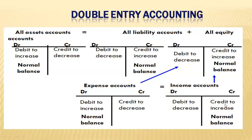The last account type is the income account. Income accounts will normally have a credit balance, just like liability and equity accounts. Any time there is an increase in income or revenue, it will appear on the credit side, while a decrease in revenue will appear on the debit side. So our liability, equity, and revenue accounts will normally have a credit balance, while a decrease in those accounts will be recorded on the debit side. For asset and expense accounts, an increase is on the debit side and a decrease is on the credit side.